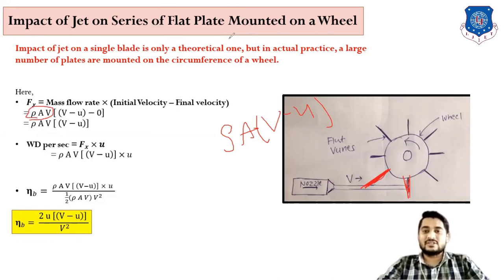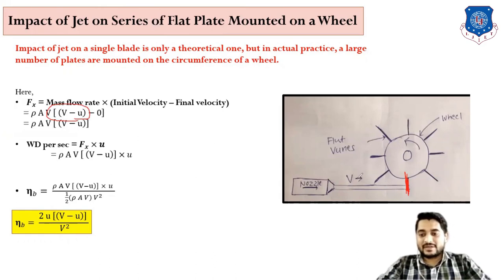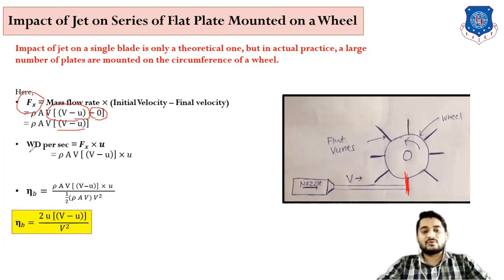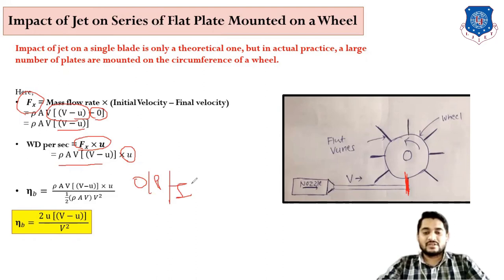The initial velocity after impact is the relative velocity, so we take (V − U). After impact there is no velocity in that direction, so final velocity is zero. Therefore force = ρAV(V − U). For work done per second, work done per second equals force into velocity of blade, so: work done per second = ρAV(V − U) × U.